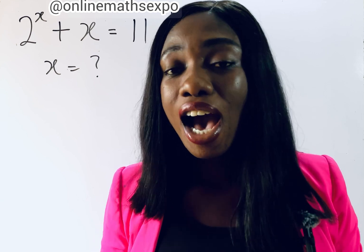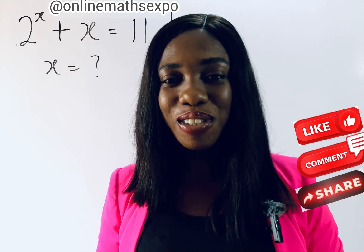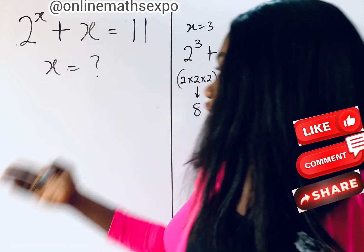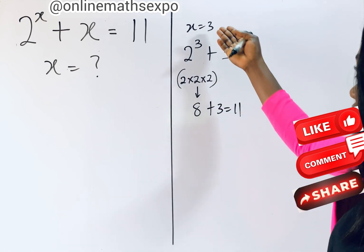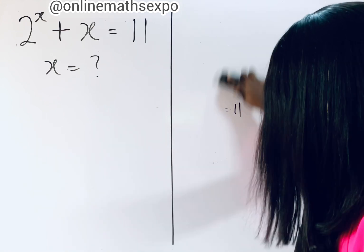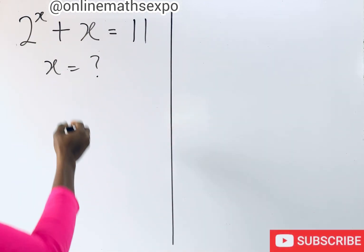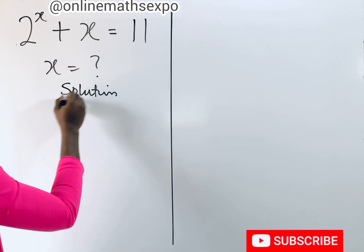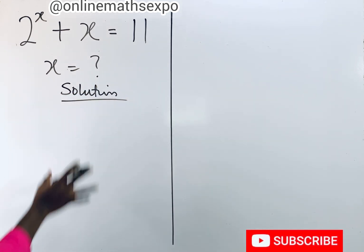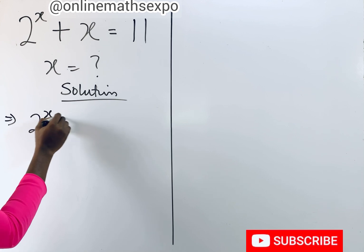We're going to show how this 3 came about. Don't forget to stay tuned because you're going to learn a lot. Now to solve this, we have seen that x is 3, so we are going to solve this to get that x as 3. Let's do this together — we have 2 to the power of x plus x is equal to 11.